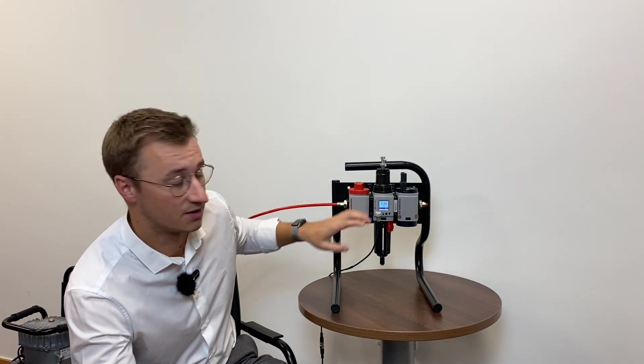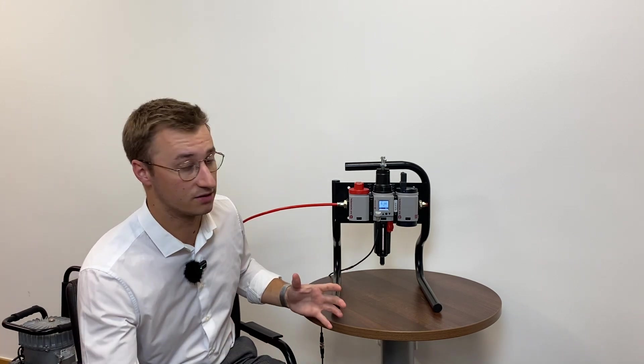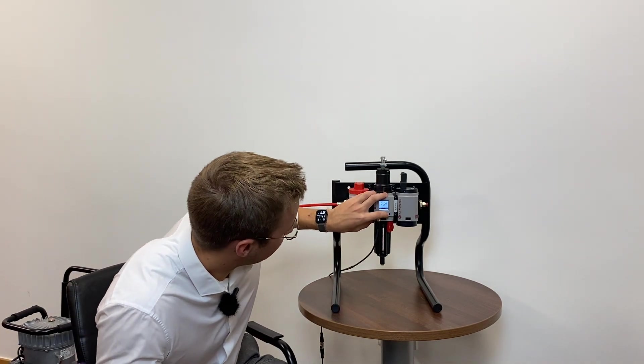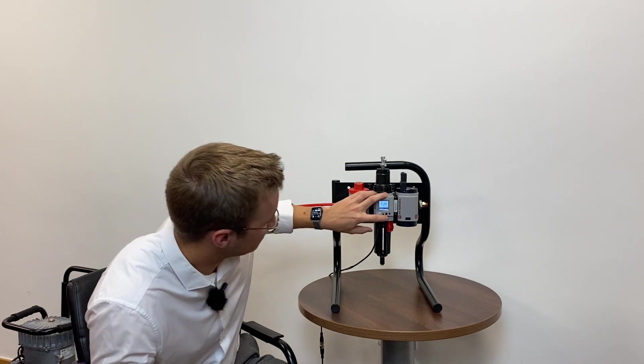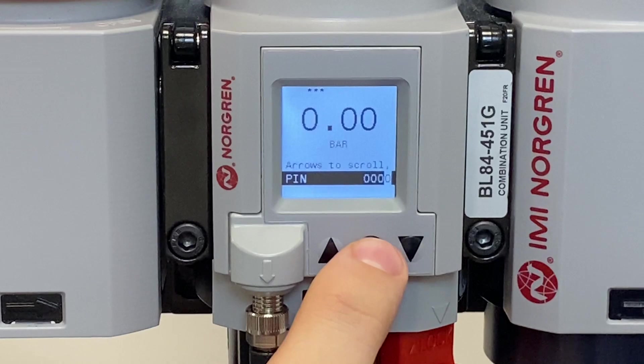So if we enter in the PIN here, for this example it's 0000, and then long press the center button again, we're through to the settings menu where we can alter things like our set point, which is the desired pressure, tolerance, which is then going to be our window for what the pressure is allowed to be within.